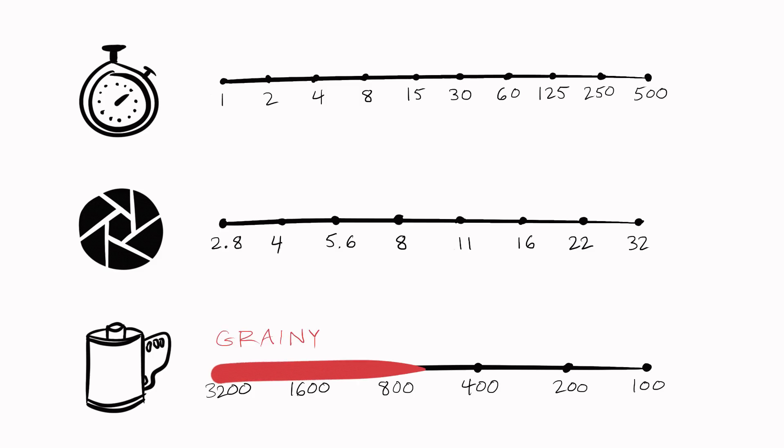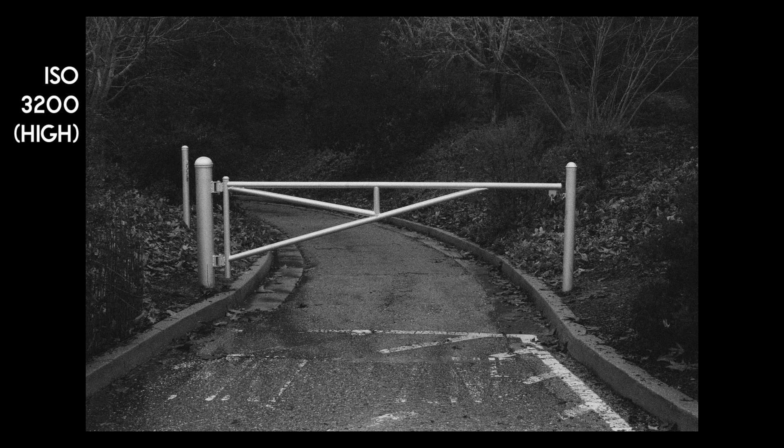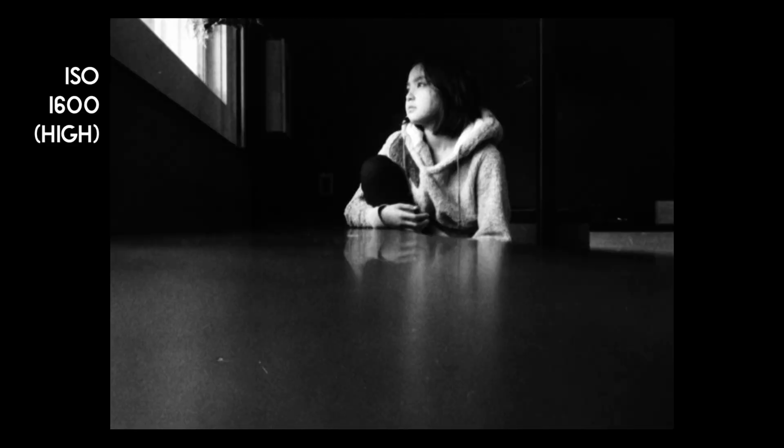So the last piece of the exposure triangle is ISO. The thing to know here is that high ISO films tend to get a little grainy — especially when you look at your photo up close, it might look like it's been textured with little grains of sand. But the advantage is you can use them even when there's not a lot of light available. A lot of rock concert photographers love high ISO films, and that's why their photos look a little grainy sometimes. It's just part of the whole deal.